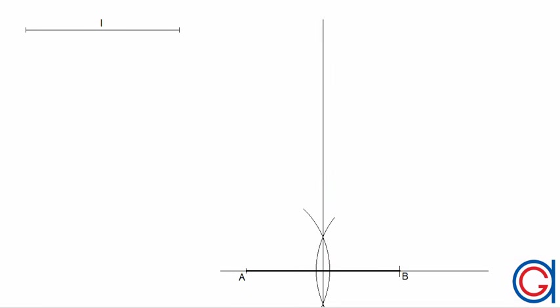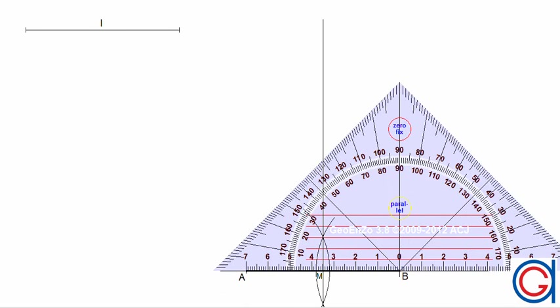So, let me remind you of the definition of the perpendicular bisector. This is the perpendicular line which passes through the midpoint M of the line segment AB.